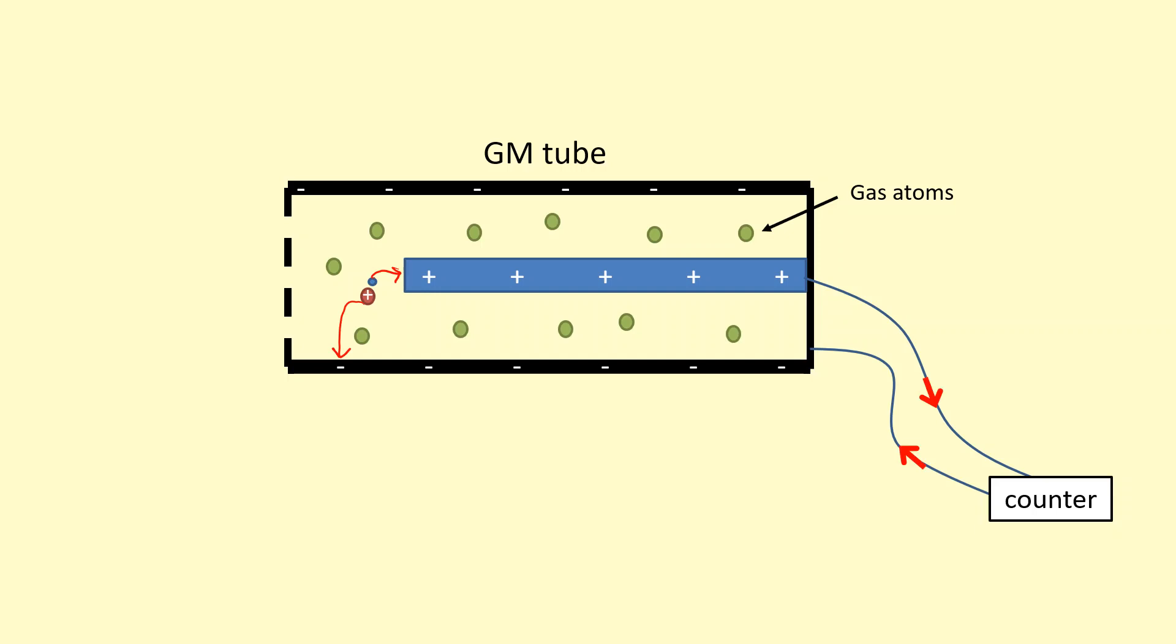And the pulse is registered as one count. When more ionizing radiation comes in, they can ionize more of the gas atoms, registering more and more counts.